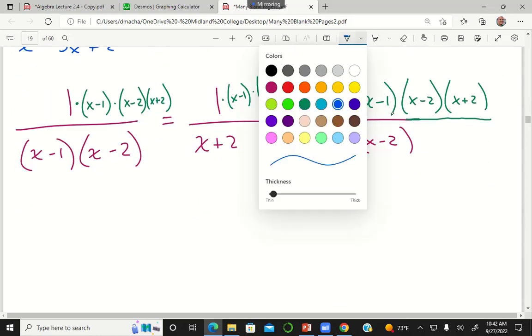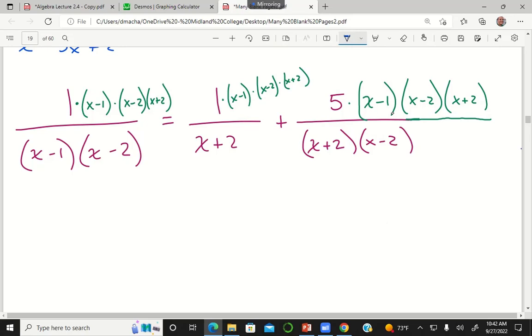And after doing this, this x minus 1 in the numerator is going to cancel with this x minus 1 in the denominator. This x minus 2 in the numerator will cancel with this x minus 2 in the denominator. And so my left-hand side is now just 1 times x plus 2.